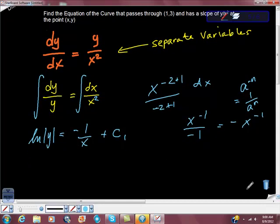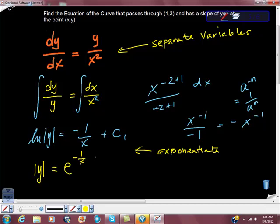Now what I'm going to do is exponentiate. I'm going to exponentiate here, exponentiate there. And this is going to give us absolute y is equal to e to the power of negative 1 over x plus c₁. Remember, this is part of the exponent.